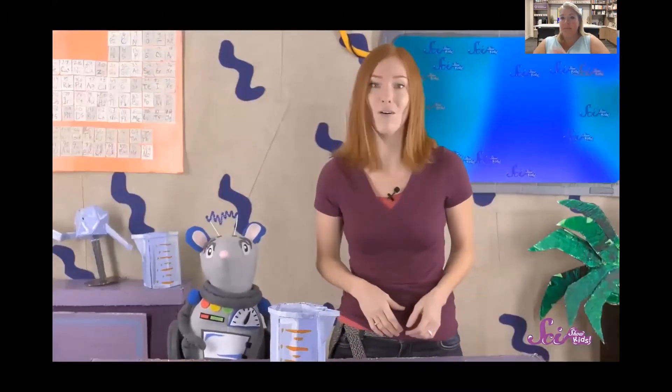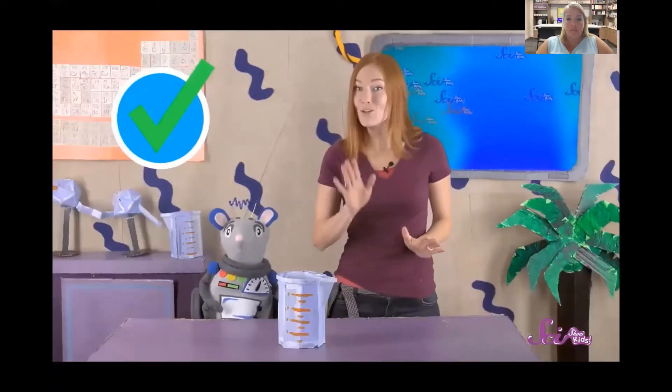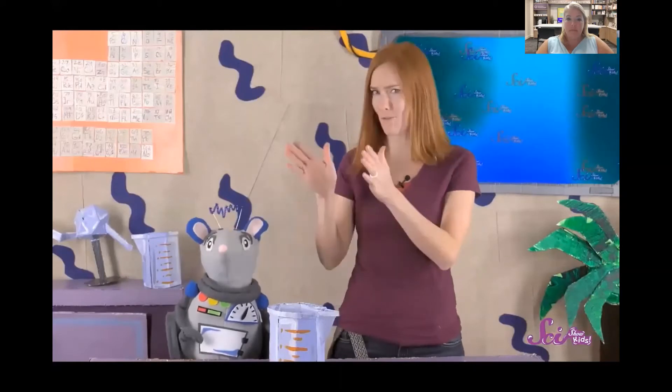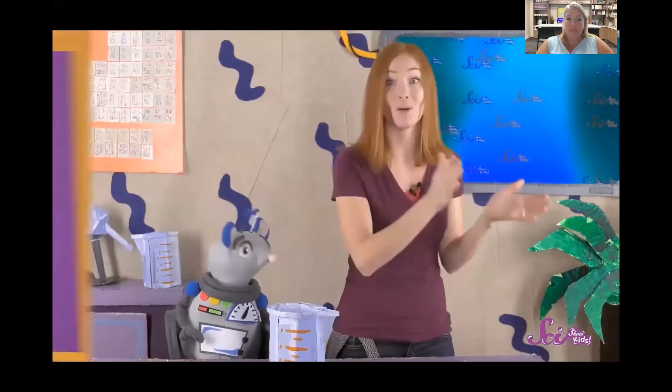Triangle? No. Square? No. Circle. And if you look at a circle, you can see that it goes around and around and doesn't have any spaces or gaps in it. And that's true of a circuit too. There can't be any spaces in the path that electricity takes to get from a battery to a light bulb. In a circuit, if electricity doesn't have a path to travel on, it stops.